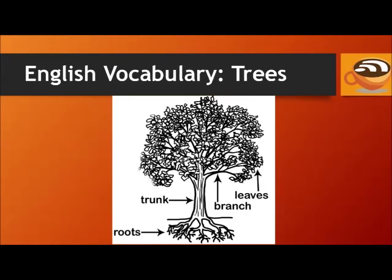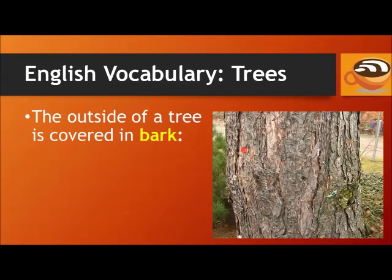The main body of the tree is called the trunk. The trunk then divides into branches. And the leaves, of course, grow from the branches. The outside of a tree is covered in bark.